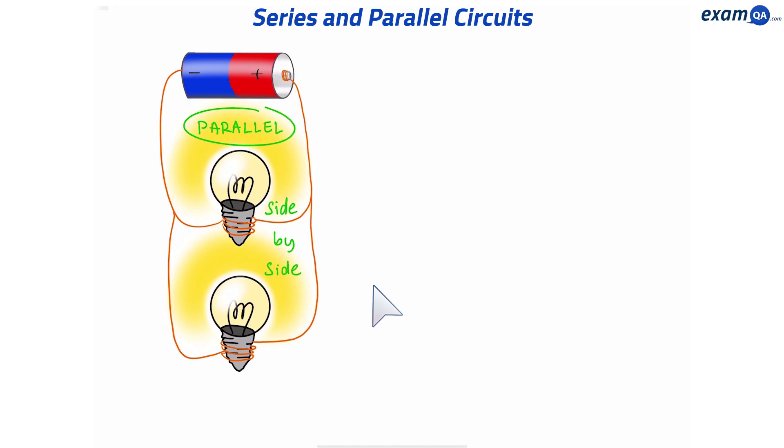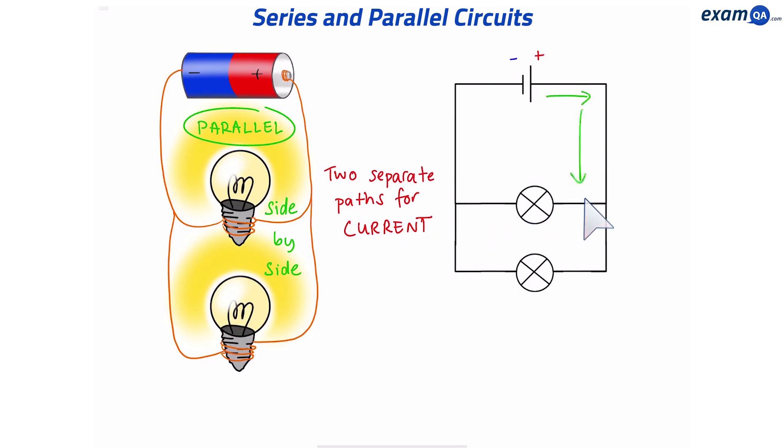Okay, moving on to parallel circuits. How do we show this as a simple circuit diagram? Just like this. So in a parallel circuit, we have two different paths for the current to flow. The current can flow like this. Or it could flow like this. Of course, both are happening at the same time.